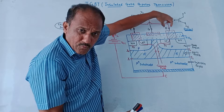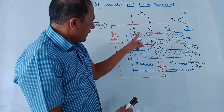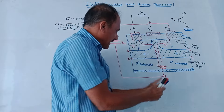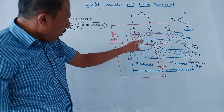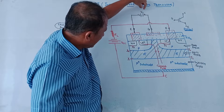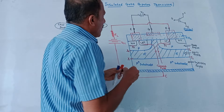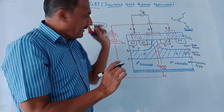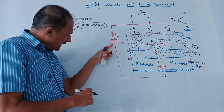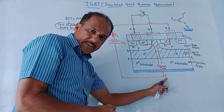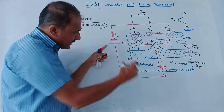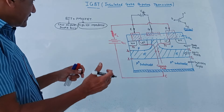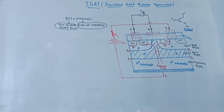Electrodes are taken out from these terminals. This is the gate terminal. These two terminals are emitter terminals, symmetric on both sides, and this one is the collector terminal. The gate terminal is connected to the positive side of voltage VG. VCC is the voltage connected to the collector terminal, with positive side connected to the collector. RL is the load resistance. This completes the construction of the IGBT.